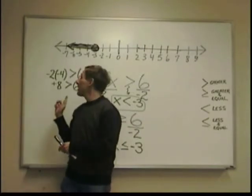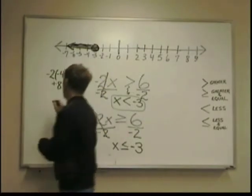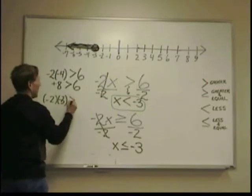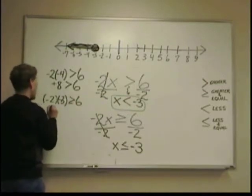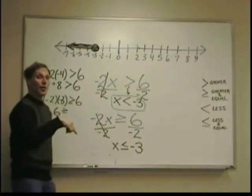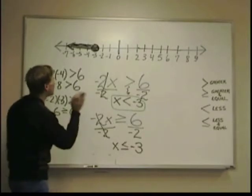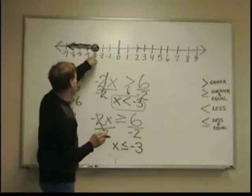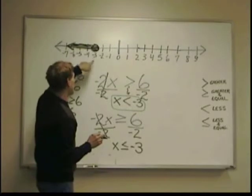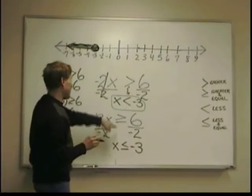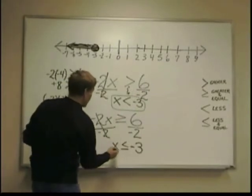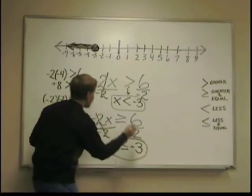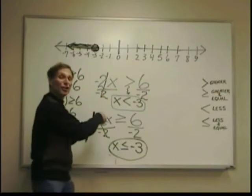If you try negative 3 as a substitution, you would have negative 2 times negative 3 is greater or equal to 6. And 2 times 3 is greater or equal to 6. So in the case of greater than and equal, the original equation, negative 3 is included because it works, because it equals. And less than, that was the solution, less than or equal to negative 3, which is the solution that you're plotting, makes the original equation work.